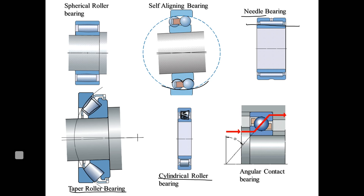All these bearings, as per their shape, can take moderate or high axial and radial loads. The last type shown is angular contact bearing. The structure changes with the inner and outer race. In a normal deep groove ball bearing there is a common groove on inner and outer race, whereas in angular contact bearing, the inner and outer raceways are displaced relative to each other in the direction of the bearing axis. These bearings are designed to accommodate combined loads — simultaneous radial and axial loads.